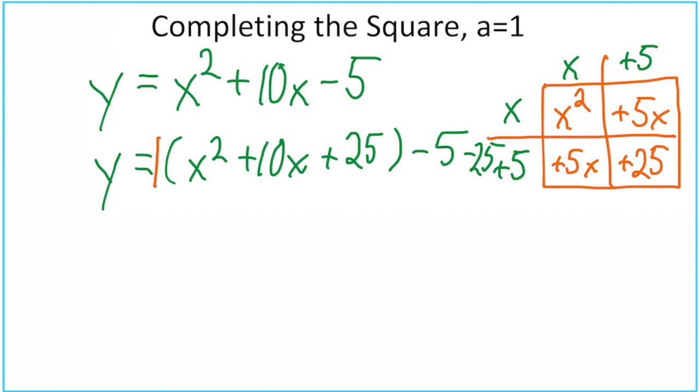Now we're ready to just jump from this to our vertex form. So we just simplify. We get y equals. Now we know that that x squared plus 10x plus 25, that is simply x plus 5 squared. And you can see that over here.